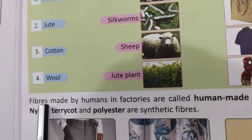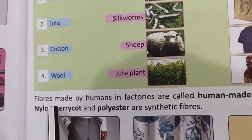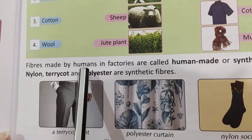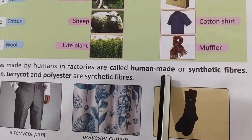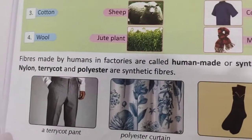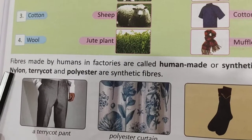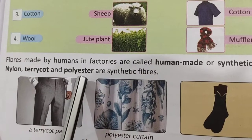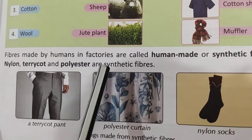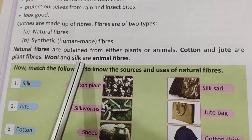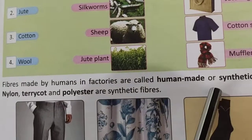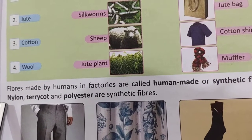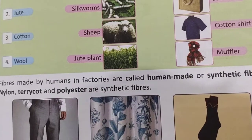Fibers made by humans in factories are called human-made or synthetic fibers. Examples of synthetic fibers are nylon, terricot, and polyester. To summarize: natural fiber examples are cotton, jute, wool, and silk — circle these and learn them. Synthetic or man-made fiber examples are nylon, terricot, and polyester.